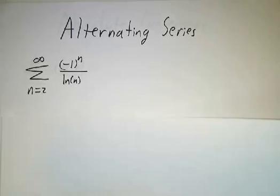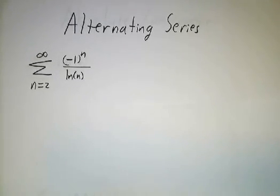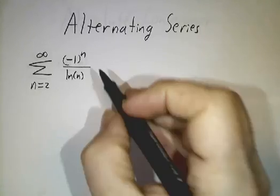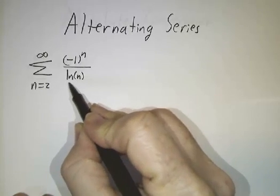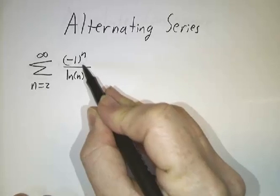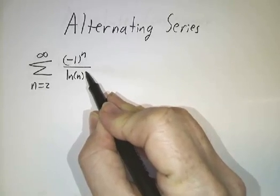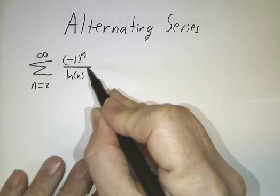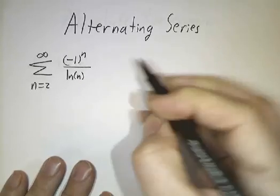Let's look at alternating series. An alternating series is one with terms that alternate plus, minus, plus, minus. You'll notice that in this alternating series the terms are getting smaller and smaller. They're flipping sign and they're approaching zero. So I have no idea what this series sums up to, but I do know that it converges.